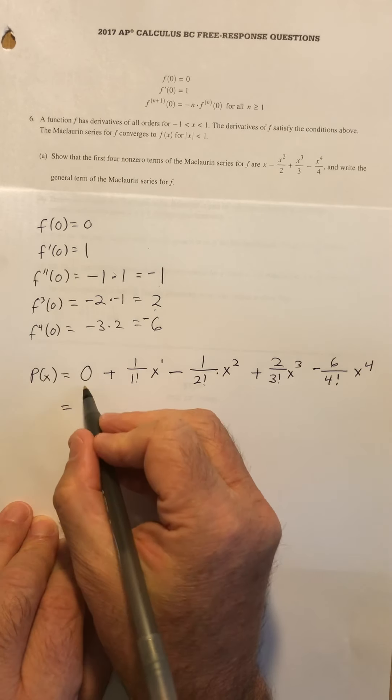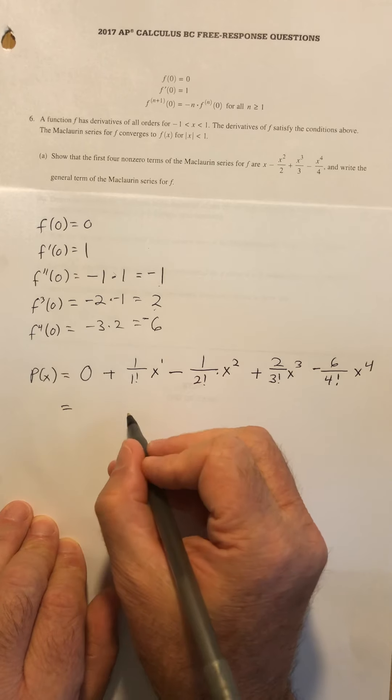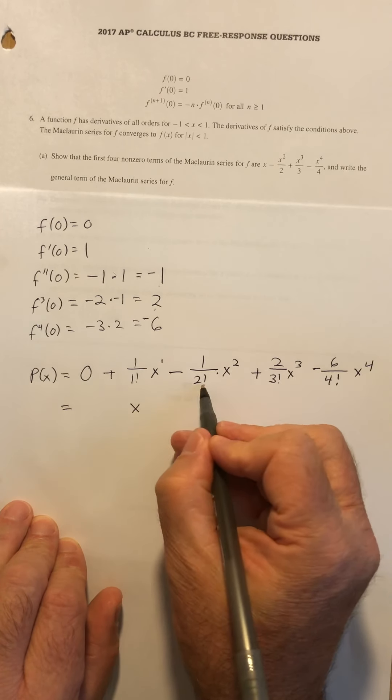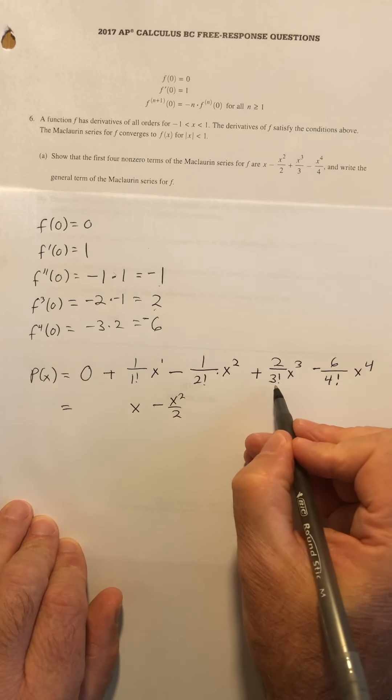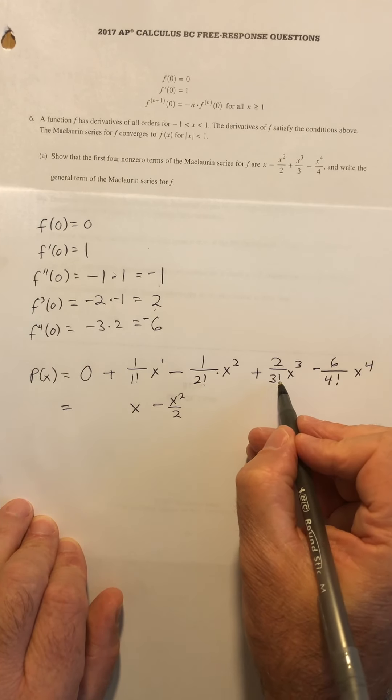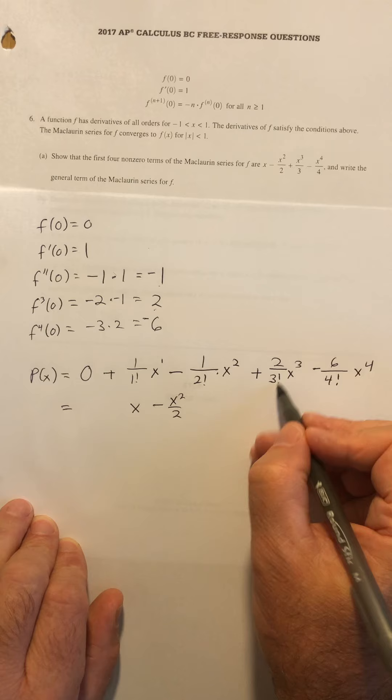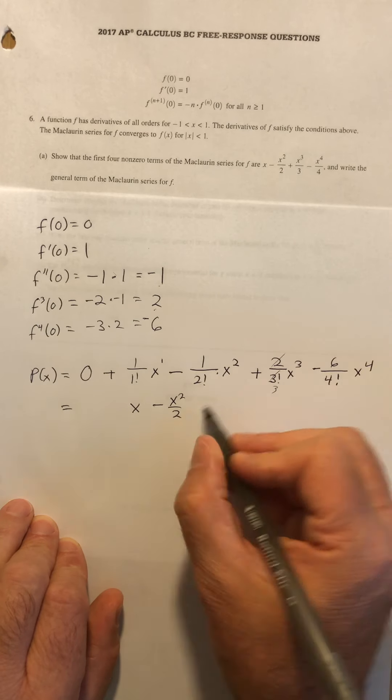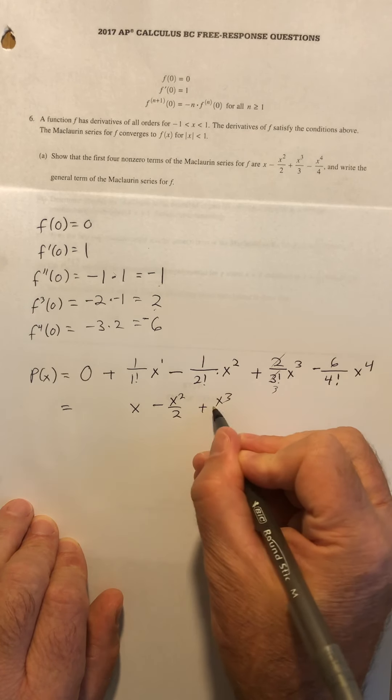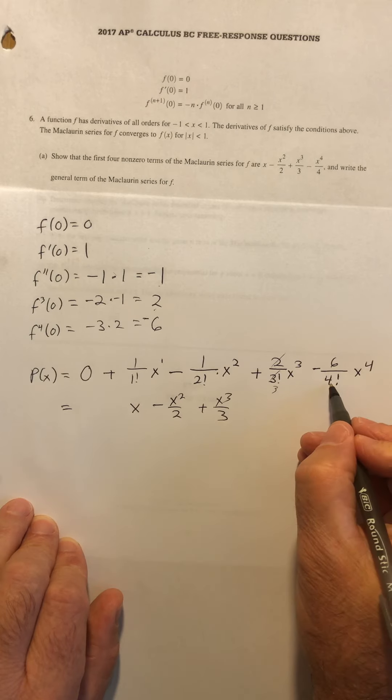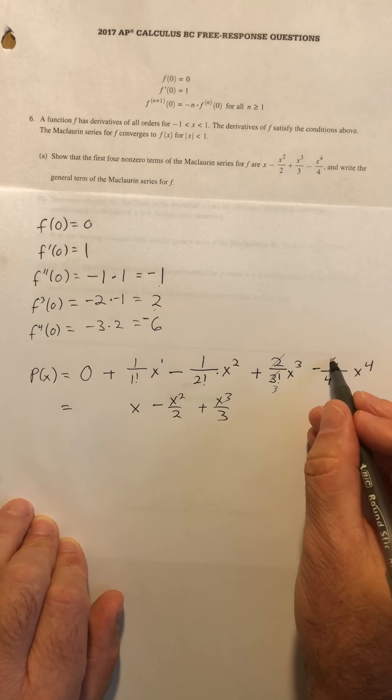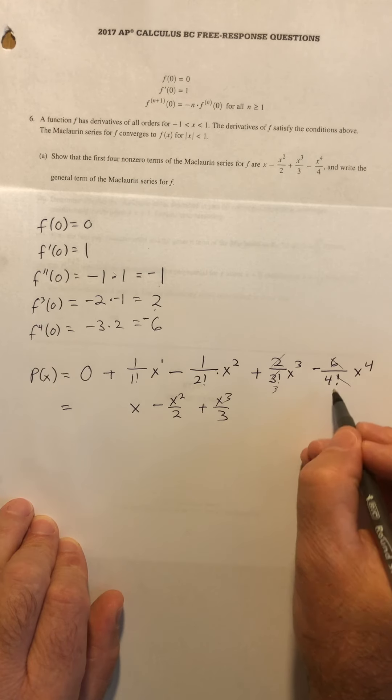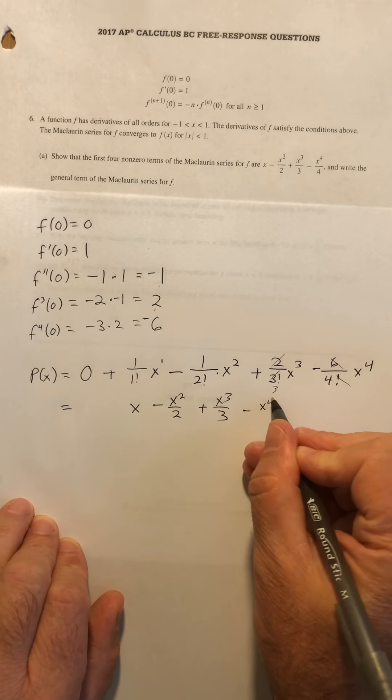If I think about simplifying this a little bit, obviously zero can go away. That's just going to be x. This is just two, and so I get minus x squared over two. This term is three factorial on the bottom. That's three times two times one. The twos are going to cancel, and you're actually going to be just left with a three here. So that becomes plus x to the third over three. And four factorial is four times three times two. And three times two and six are going to cancel. So basically, you're just left with a four on the bottom. And so you get that.